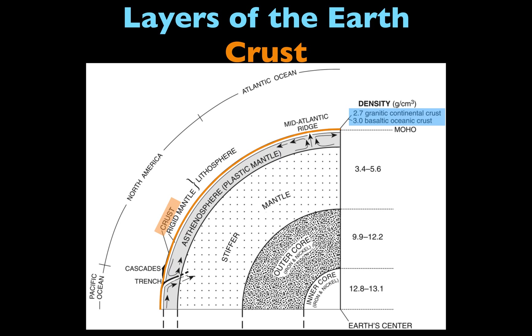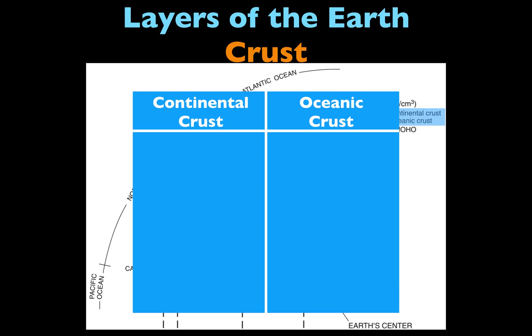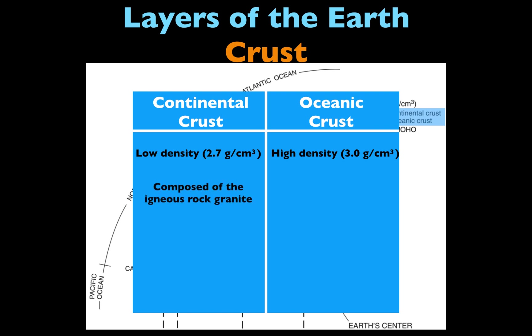Now we need to know the difference between continental and oceanic crust. The first main difference, which we can find on the reference table highlighted in blue, is that the continental crust has a lower density of about 2.7 grams per centimeter cubed. On the other hand, the oceanic crust has a higher density at about 3 grams per centimeter cubed. The continental crust is composed of the igneous rock granite, while the oceanic crust is composed of the igneous rock basalt. This can help us understand why there are different densities for the crust.